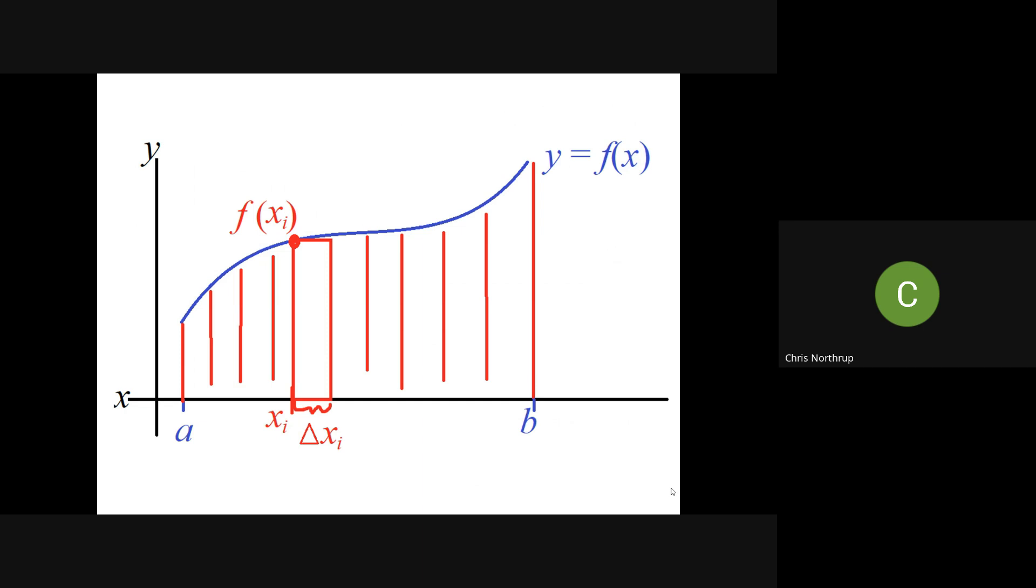So first, let's zoom in on that one rectangle and look at its area, base times height. The base is delta x sub i. The height is the y value, f of x sub i. So if I took that area of that one rectangle, and then I was looking at the total area there,